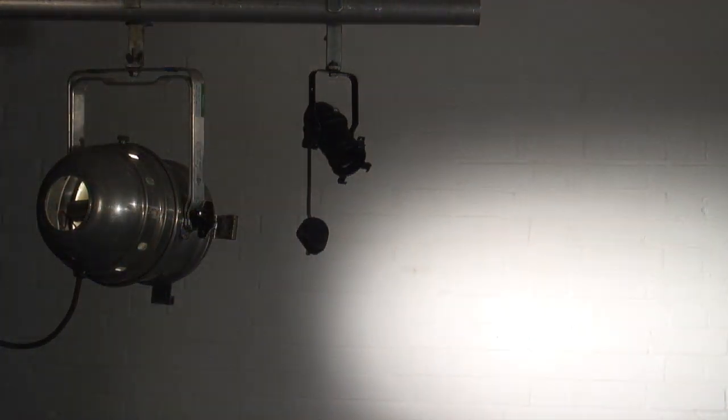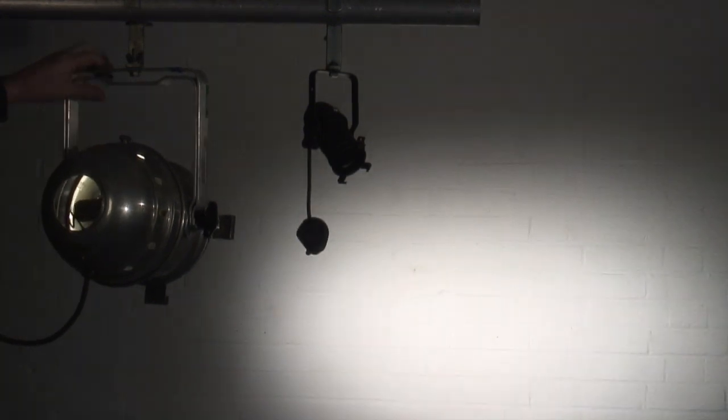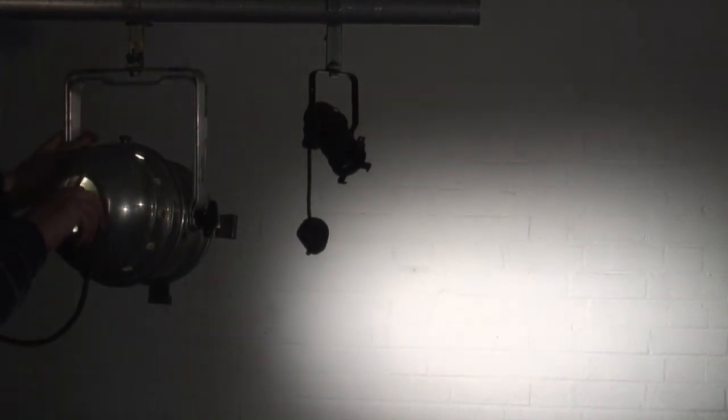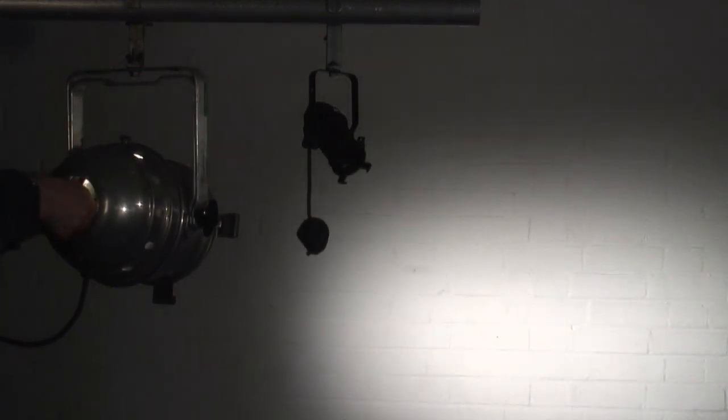Now when we turn one on, you'll see they are very bright and you get an oval-shaped beam. The only adjustment you can do, apart from changing the lamp, is to change the axis of the beam to suit your stage.